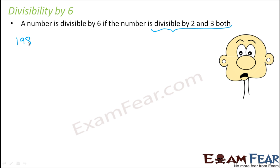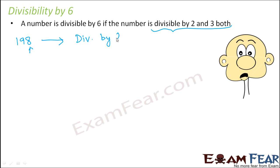Let us quickly take an example — the number 198. How do we know it is divisible by 6? First we check if it is divisible by 2. As per the rule, if a number has 0, 2, 4, 6, or 8 in its units place, it is divisible by 2. So 198 is divisible by 2 and is an even number.